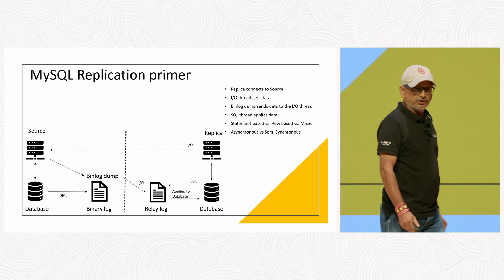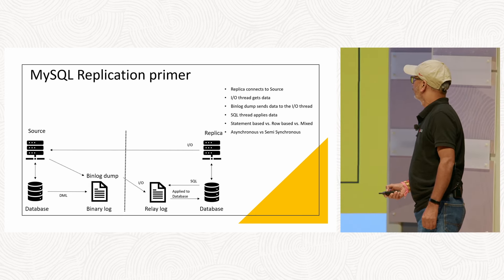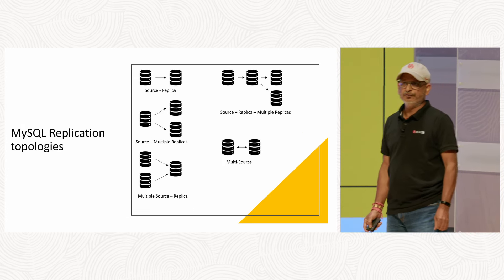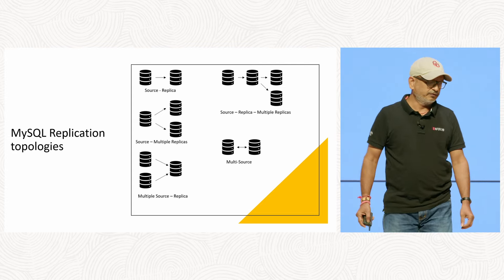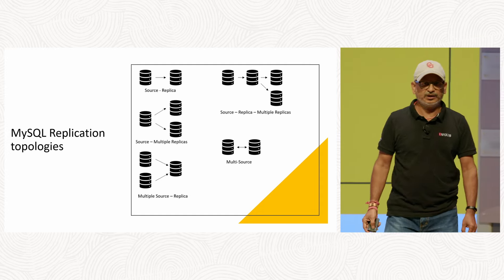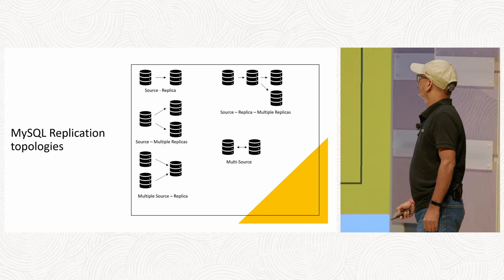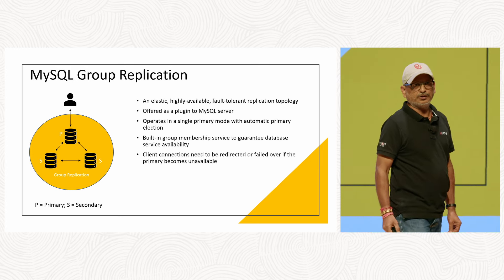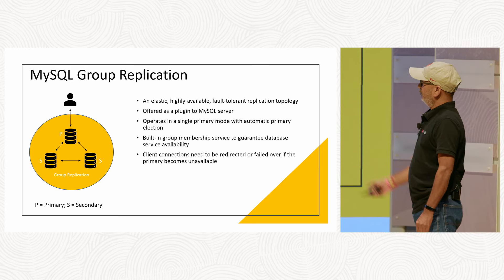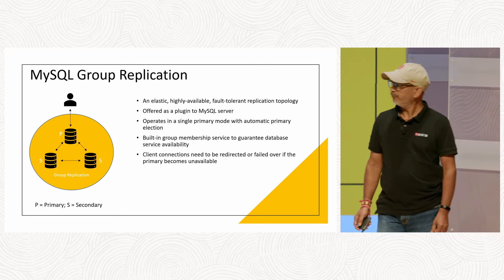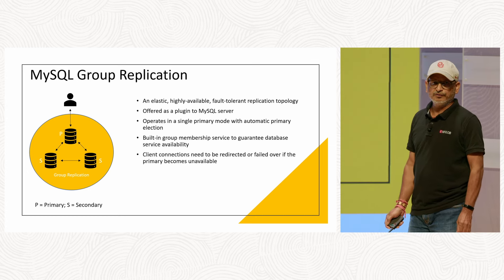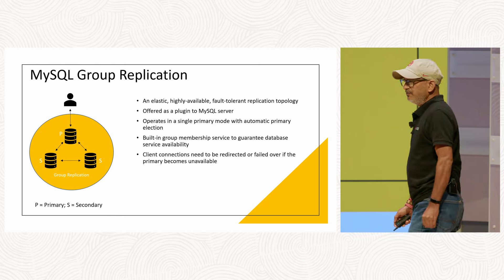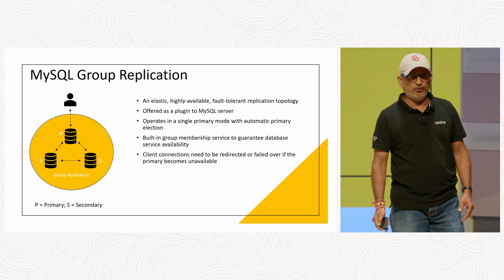We also have two choices: asynchronous and semi-synchronous replication. There are several replication topologies showing how MySQL supports multiple replicas from master to different types of replica setups. When talking about high availability and disaster recovery, MySQL starts with group replication. On the left-hand side you have one primary and two secondary servers. When something goes wrong with the primary server, one of the secondaries automatically becomes primary. However, the client has to reconnect once the primary changes.